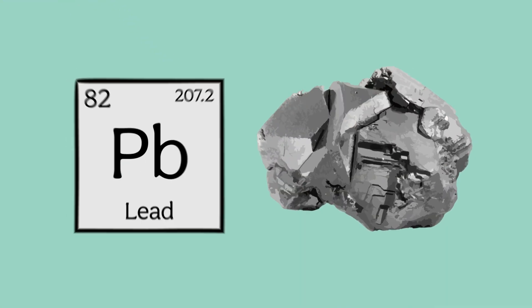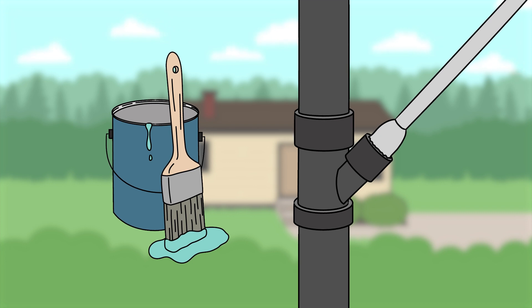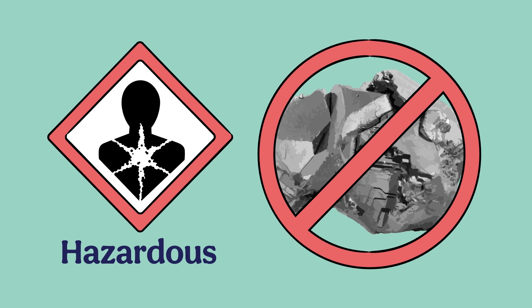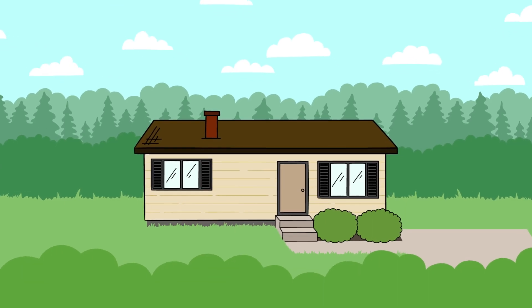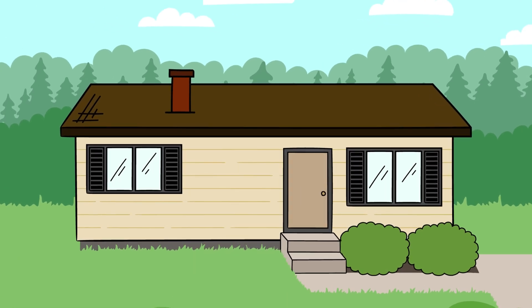Lead is a metal that exists naturally in the environment. It was used in many household products like paint and water pipes. Lead was removed from most products in the 1980s because it is toxic. However, many older buildings and products still contain lead.